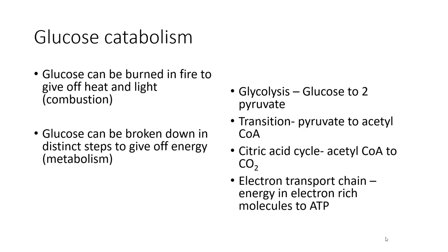There is glycolysis, where we turn that glucose molecule into 2-pyruvate and harvest energy from that transition. There is a transition step where we turn pyruvate into acetyl-CoA and harvest energy. There is the citric acid cycle, where we break down acetyl-CoA into CO2 and harvest energy. And then there is the electron transport chain, where we use the energy harvested from the prior three steps to make ATP.